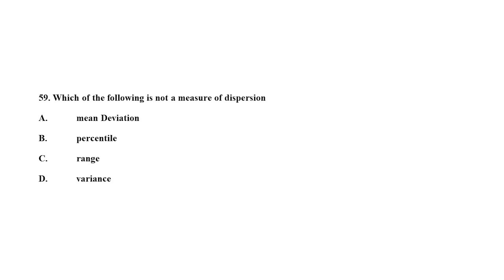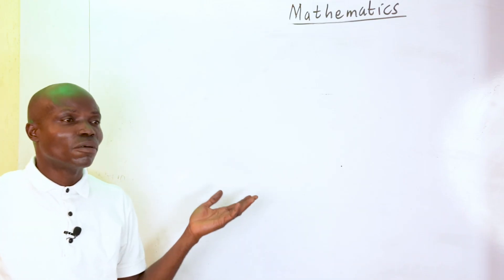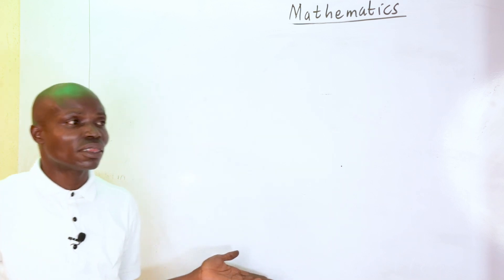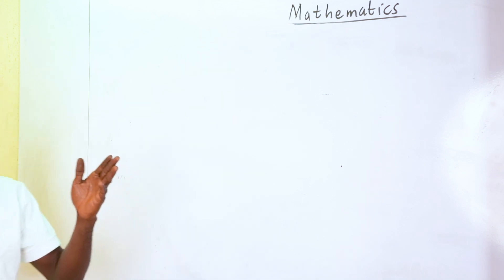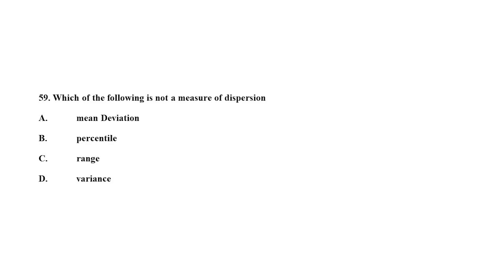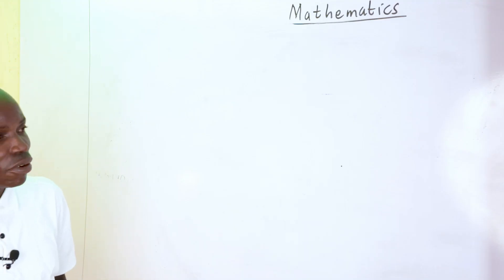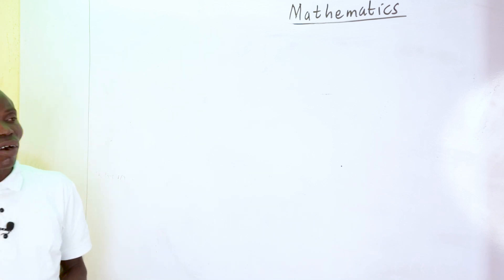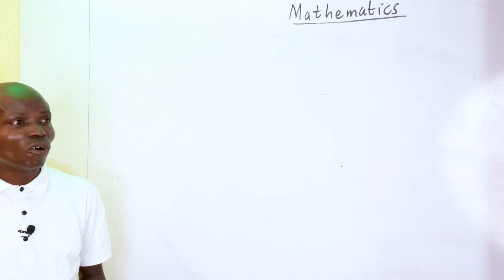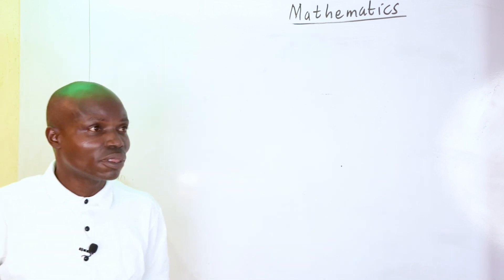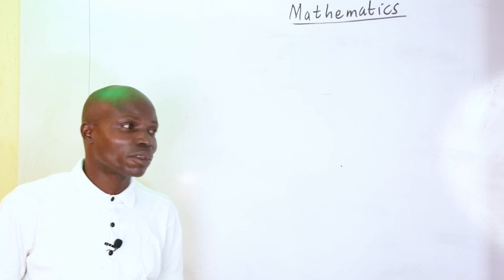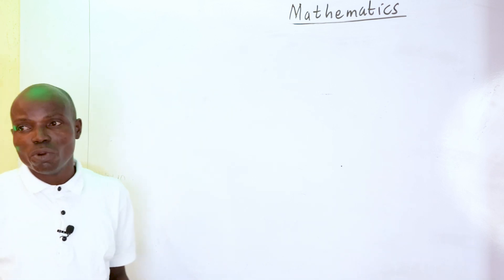Question 59: which of the following is not a measure of dispersion? In statistics we have measures of central tendency, dispersion, and location. Mean deviation, range, and variance are all measures of dispersion. Percentile, however, is a measure of location — not dispersion. So the odd option is percentile, which is option B.